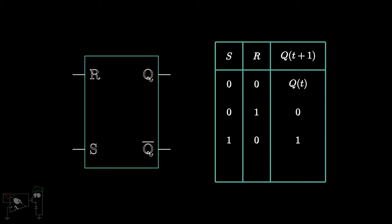Similarly, if S is 1 and R is 0, then the output will be high. Both inputs being high forces the RS flip-flop to a forbidden state, which is something we want to avoid.